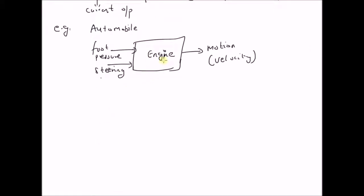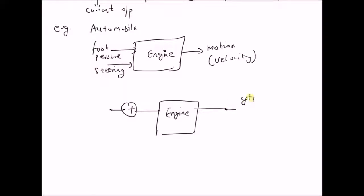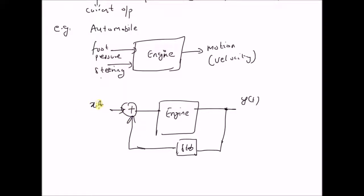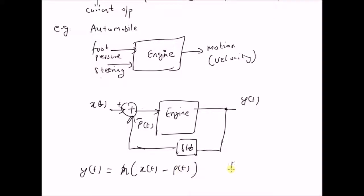Even in the situation where the automobile has a feedback connection from the output to the input — that is, we have an adder which goes through the primary system, say the engine, and then we have an output y(t) and also a feedback connection — say some kind of stabilizer that feeds the value of velocity from a previous instant into the system and converts it into a desired foot pressure p(t). Here, the output y(t) is a function of x(t) minus p(t), and p(t) is a function of the previous output. So the system is still dependent on the previous values of the output, and the system is still causal even though it has a feedback connection.